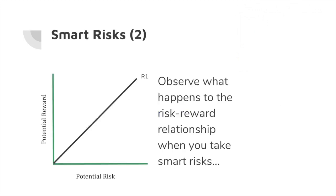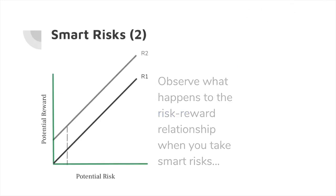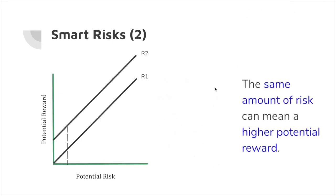Let's look at the relationship when you take smart risks. Look at the graph now that we have considered a smart risk. As you can see, the line actually goes upwards, which means that for the same amount of risk, you can obtain a higher potential reward. The dotted line shows that it's lower risk for higher reward. You should always be trying to consider which decision in life will be a smart risk that will allow for a higher potential reward.